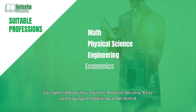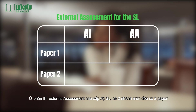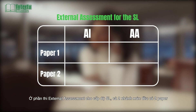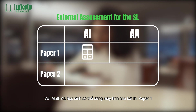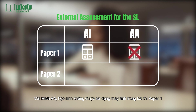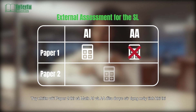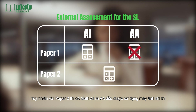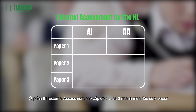In the external assessment for the SL, both Math AI and Math AA have two papers. With Math AI, technology is required for paper 1. With Math AA, no technology is allowed in paper 1. However, with paper 2, both Math AI and AA are allowed to use technology when taking the test. In the external assessment for the HL, both have three papers.